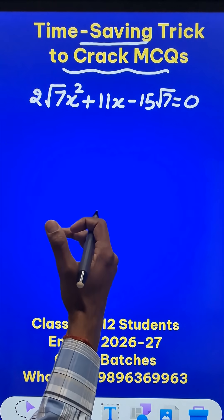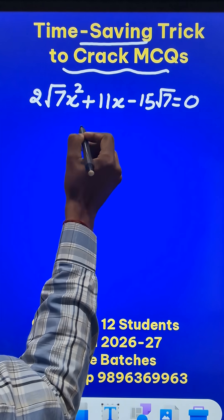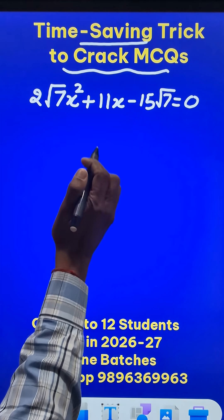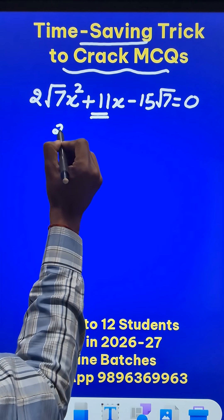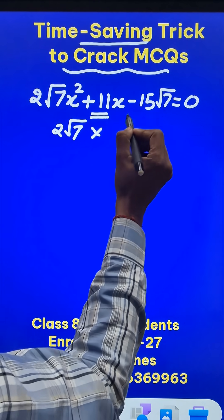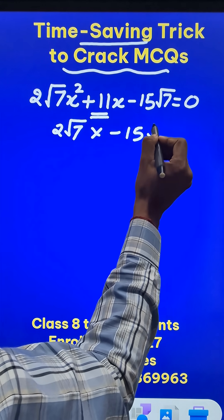Now how do you solve that without many steps and splitting the middle term also becomes easy? I need two numbers whose sum is 11 and whose product is the product of the first coefficient, that is 2√7, times the constant term, that is negative 15√7.